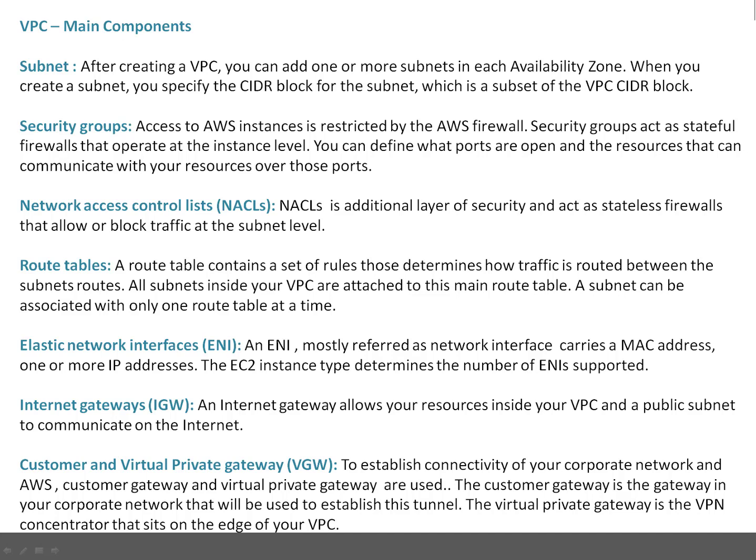Internet gateways: when you want to allow a subnet to communicate with the internet, you attach that subnet to an internet gateway. This allows public access to your instance. You can still restrict access using security groups, but your instances can reach the internet or be accessed from outside your network.